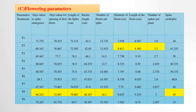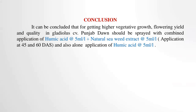For spike yield per plant, T8 gave the best result. In conclusion, for higher vegetative growth, flowering yield, and quality in gladiolus cultivar Punjab Don, combined application of humic acid 5 ml per liter and natural seaweed extract 5 ml per liter at 40 and 60 days after sowing is recommended. Alone application of humic acid at 5 ml per liter also gives good results. Thank you.